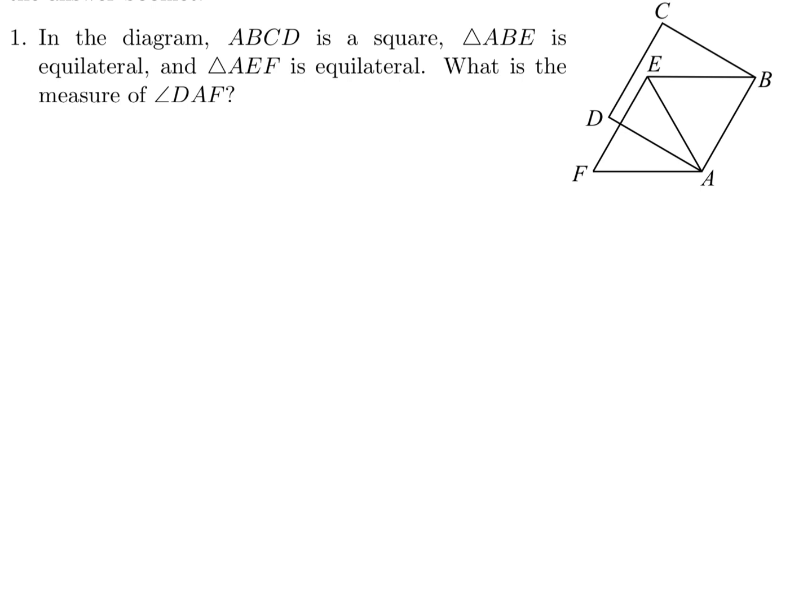Well, if ABCD is a square, then obviously those four sides are equal. And ABE is equilateral, so that means those three sides are the same. Now, they're also saying that AEF — that triangle is also equilateral, so those are all the same. So we can kind of do some angle chasing here and see what we get.